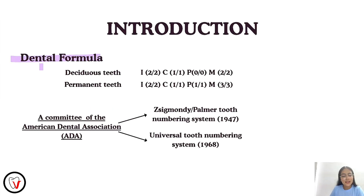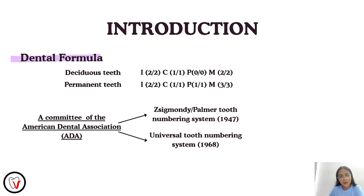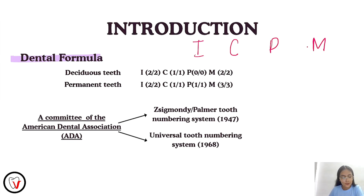We'll start with the dental formula. The number of teeth present in the half of the upper jaw and the half of the lower jaw is called the dental formula. The denomination of each tooth is often represented by the initial letter in its name. For example, I stands for the incisors, C for canines, P for premolars, and M for molars. Each letter is followed by a horizontal line, with the number of each type of tooth placed above the line for maxilla and below the line for mandible.